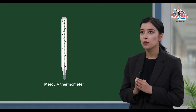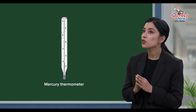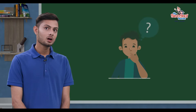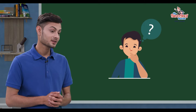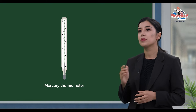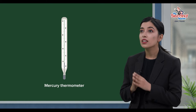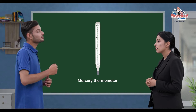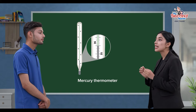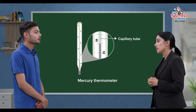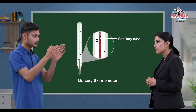If you think about it, I will explain it in detail. How does a mercury thermometer work? Listen, this is a capillary tube. A capillary tube is a narrow diameter tube.